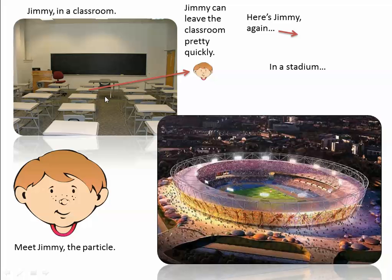But if I'm carbon dioxide in the large stadium, it's going to take a lot longer to get that molecule all the way out. Similarly, if I'm trying to get glucose, energy, or oxygen in, the smaller situation is much better. The smaller a cell is, the easier it is for molecules to move in and out pretty quickly, whether getting rid of waste or taking up nutrients — and that's something our cells need to do well.